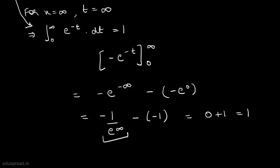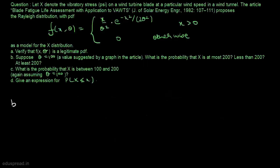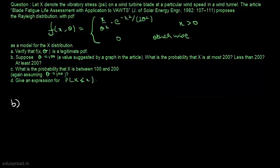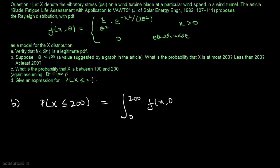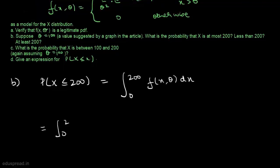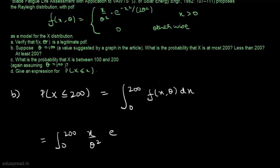Now let's move to part B. We suppose θ = 100 and find the probability that X is at most 200, i.e., P(X ≤ 200). We integrate the PDF, x divided by θ² times e raised to the power minus x² divided by 2θ², dx.